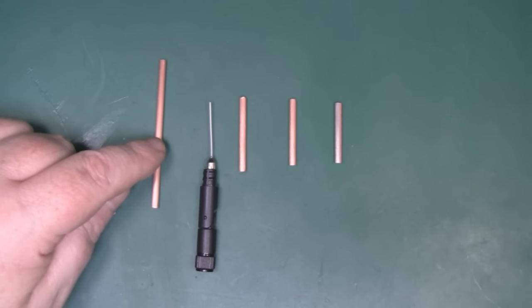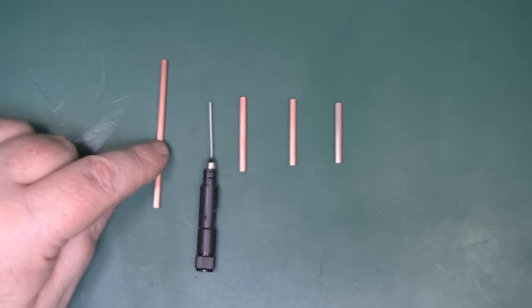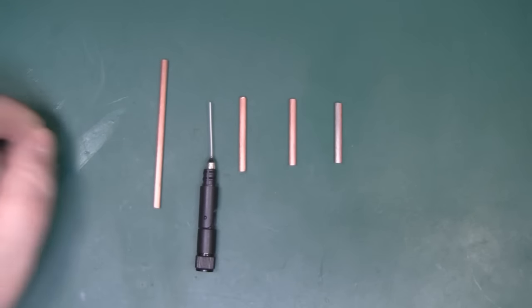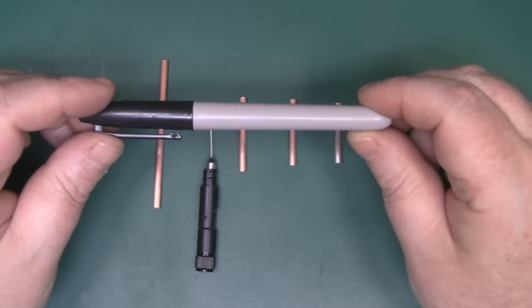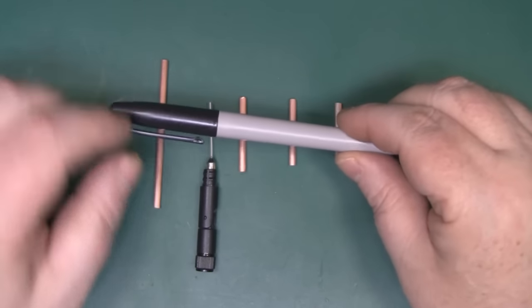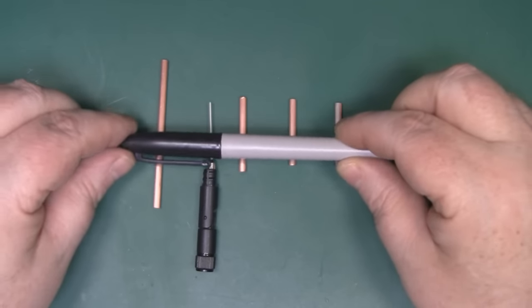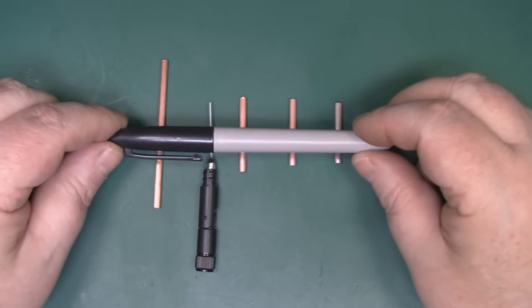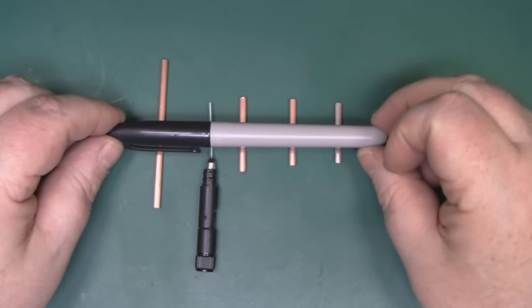As for the elements themselves, I've cut them out of some 3mm copper wire. You could use slightly thinner if you wanted to. It shouldn't make much difference. And for the boom itself, I'm actually going to use a sharpie to hold all the elements and also drill a hole in it to fit over the top of that rubber duck dipole antenna and effectively turn it into a little Yagi antenna.